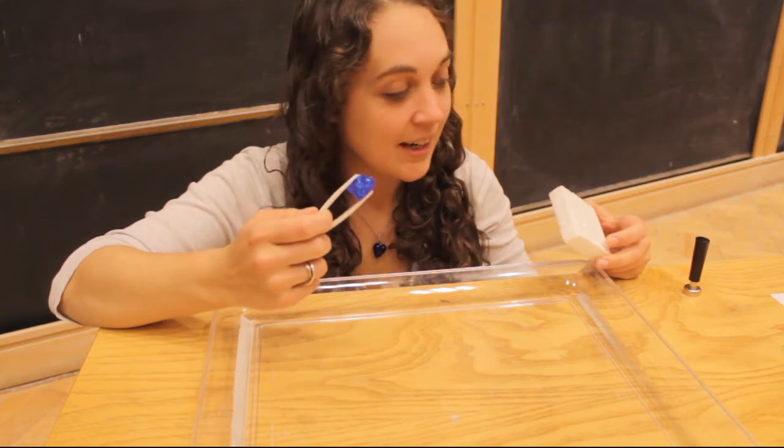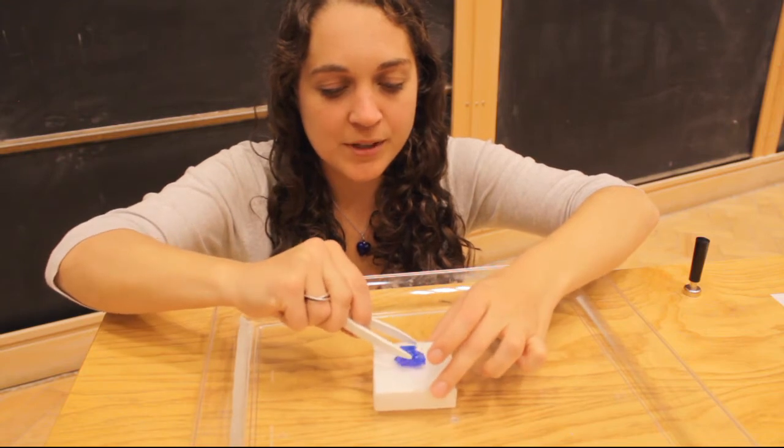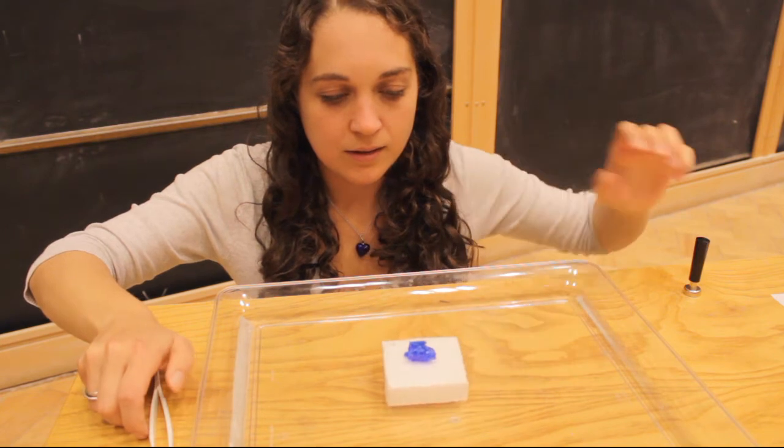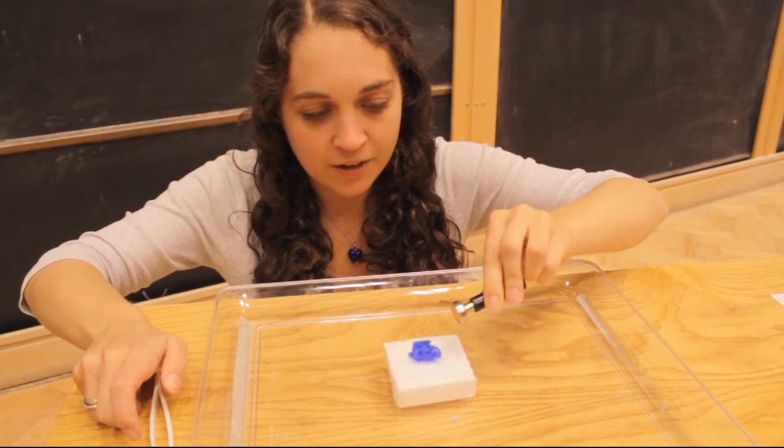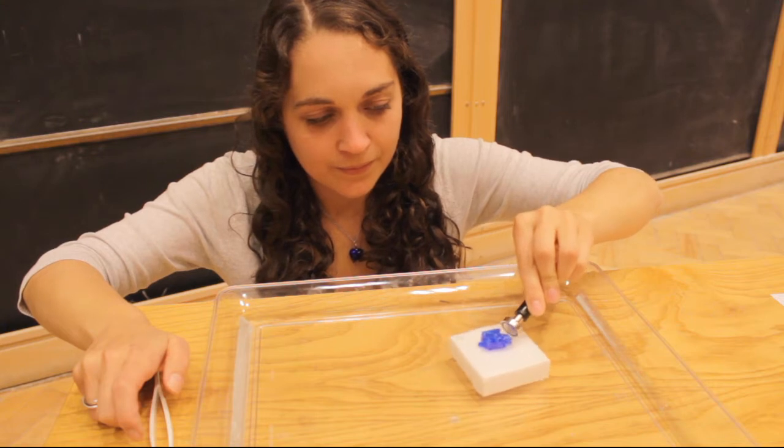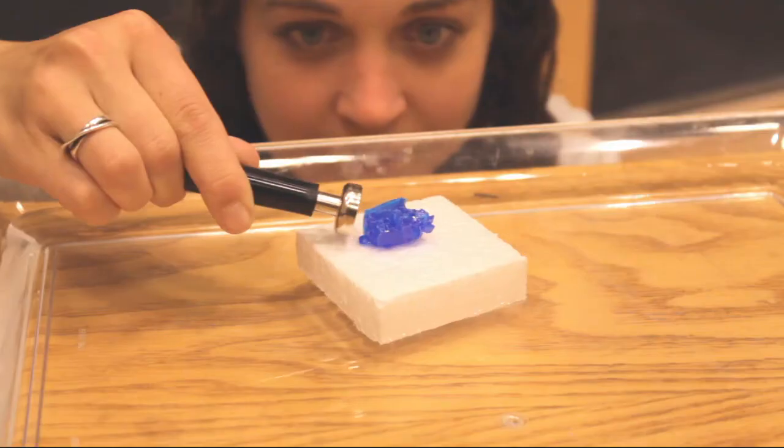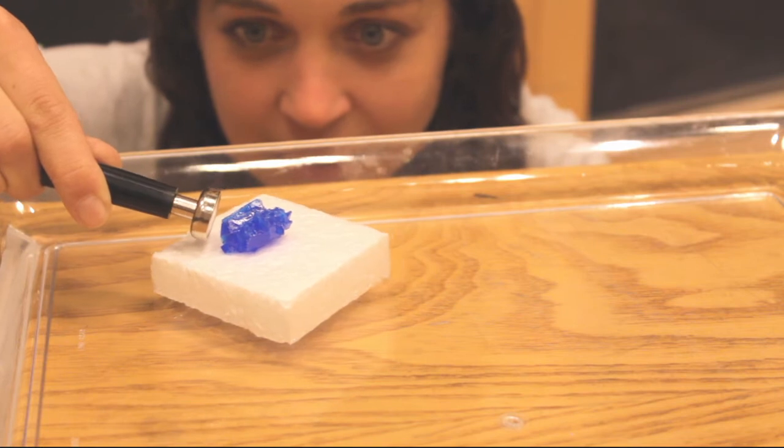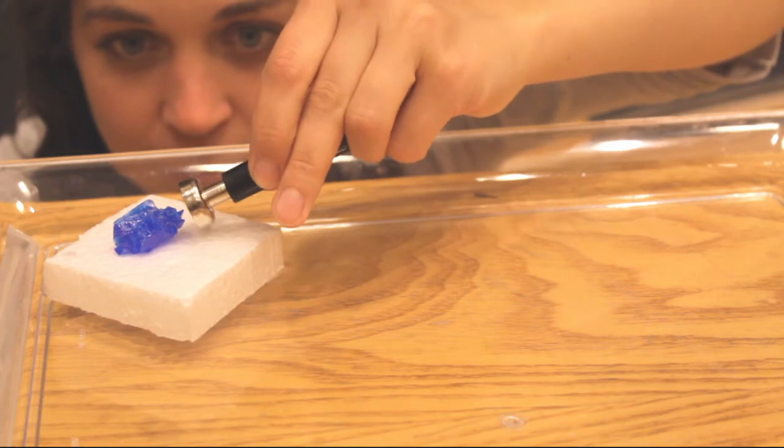So, I have my piece of copper sulphate and I have a piece of polystyrene foam. And I'm going to put my piece of copper sulphate on the polystyrene foam. And then, it should stay pretty still. And then I'm going to bring the magnet near it. And you can see, I can pull the copper sulphate around just using a magnet.